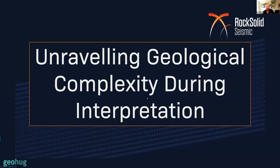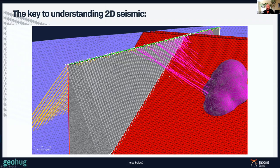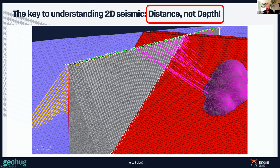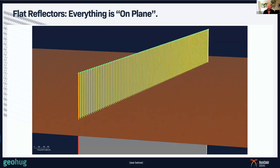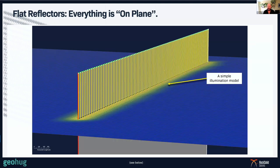How do we unravel geological complexity during interpretation? The key to understanding 2D seismic data is not to think of it as depth, but to think of it as distance. The distance from a reflector to our seismic line is represented as a depth on the seismic line. As long as things are directly below the line, depth equals distance. But when things are off the plane of the seismic line, we have to think of distance, not depth. For flat reflectors everything is easy — the ray path model says everything is directly below the seismic line, and the illumination model confirms this, honouring the 90-degree rule.